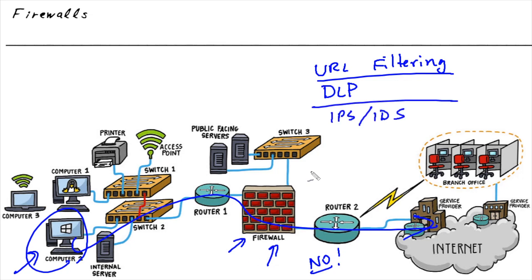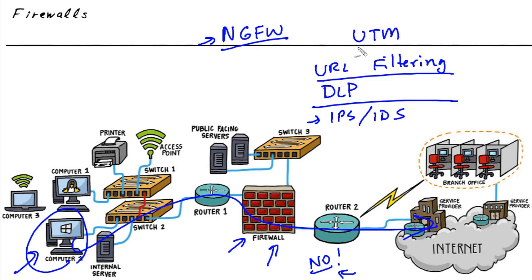Another feature many firewalls have is the ability to analyze all traffic going through them and perform intrusion prevention and detection services. Because the firewall sits between two networks, if it sees something that looks like an attack, malicious content, viruses, malware, or certain types of attacks trying to harm internal networks, it can drop that traffic and send an alert. As firewalls get fancier, there's a term for it: NGFW, or Next Generation Firewall. Another term often used is UTM — Unified Threat Management — which can incorporate many features into one system.